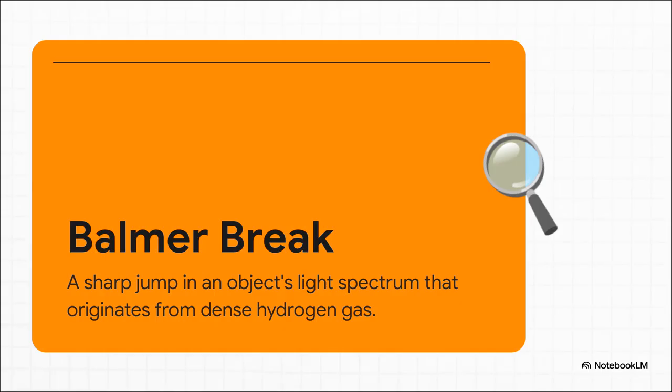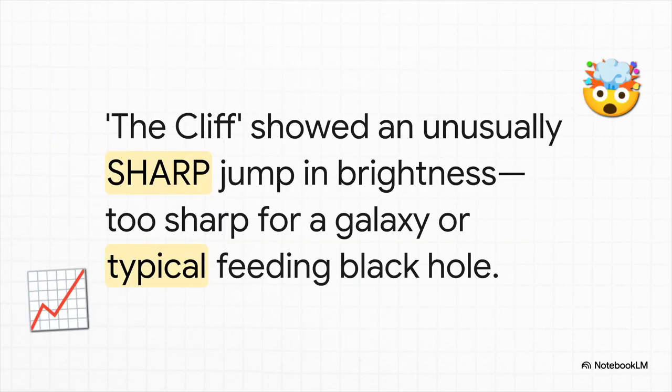The big clue they found was hidden in the light coming from this object. In its light spectrum, there's this feature called a Balmer break - like a cosmic fingerprint. It's a really sharp jump in brightness that you only get when light goes through dense hydrogen gas at a very particular temperature. The Cliff had a Balmer break, but it was weird. It was way sharper than it should have been - like a much steeper cliff, hence the name - than you'd ever see from a normal galaxy full of stars. And it was also too sharp for a typical black hole that's just feeding on gas. That incredible sharpness was the smoking gun.